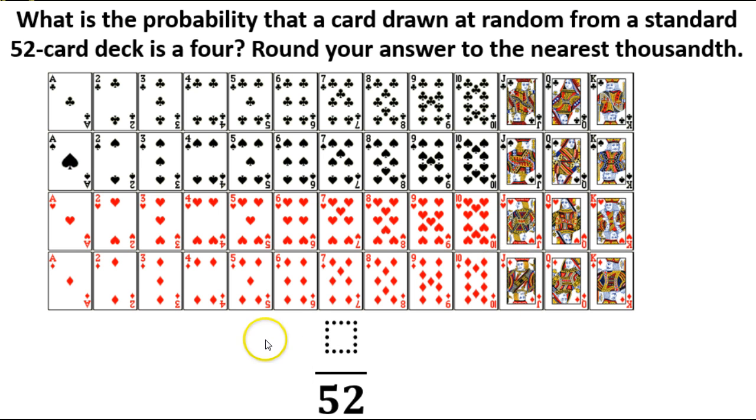So probability is the number of desired results over the total number of possible outcomes. So possible outcomes, if we're taking a card, we have 52 different possibilities that we can end up with. So we need the desired one, and we need to look and see how many of these are going to be our desired ones.